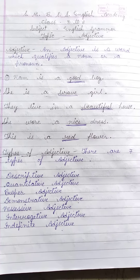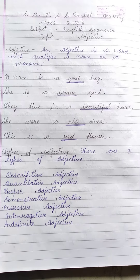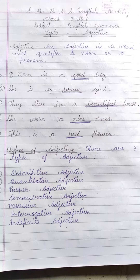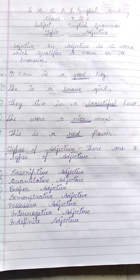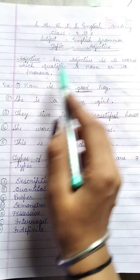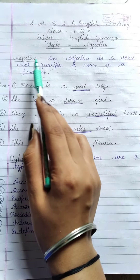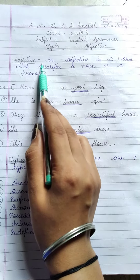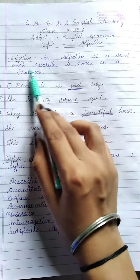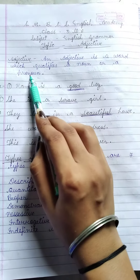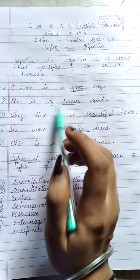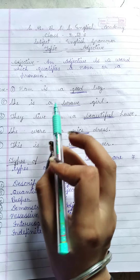Hey guys, I am Namta from SMBSS English Academy, Gurshine. My subject is English grammar and the topic is adjective. First, what is the definition of adjective? An adjective is a word which qualifies a noun or a pronoun. Adjectives tell us about the quality of the noun and the pronoun.